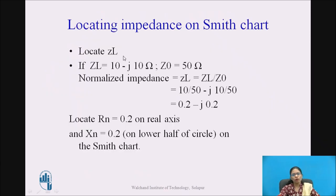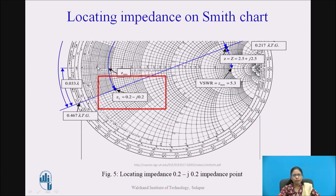Now let me show you locating an impedance point that has a negative imaginary part. For a load impedance that normalizes to 0.2 minus J0.2, locate Rn = 0.2 and Xn = 0.2, but the Xn circle is on the lower half of the Smith chart because the sign is negative. The coinciding point 0.2 minus J0.2 is in the lower half because the reactance X is negative.